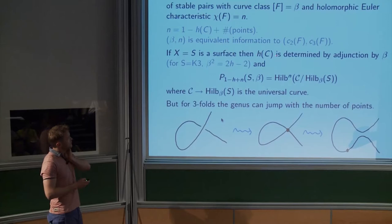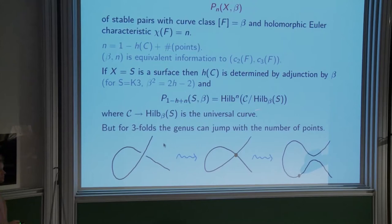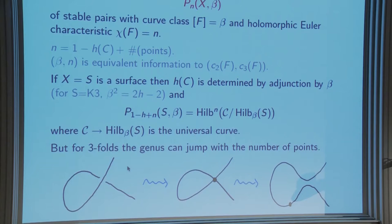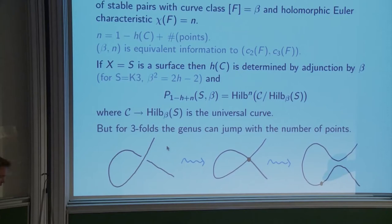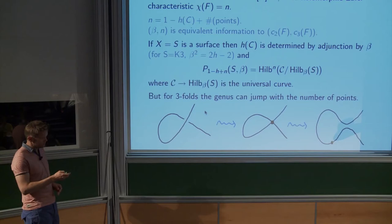Until now X is just a projective variety, but it's about to become a threefold. For a surface, the moduli space of stable pairs really is curves with points on them: you take the Hilbert scheme of curves in S in class beta — if the surface has trivial fundamental group this is just a projective space — take the universal curve over that, and then the relative Hilbert scheme of points on the fibers. But for threefolds, the KKV formula is crucially a theory about threefolds; in stable pair land you really need to thicken out of the K3 surface.